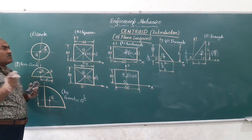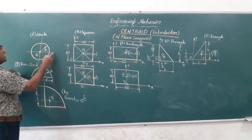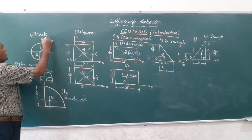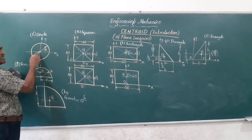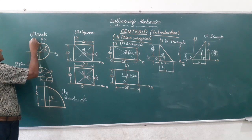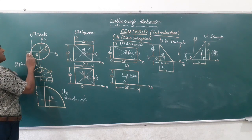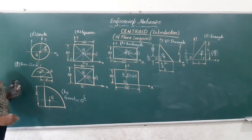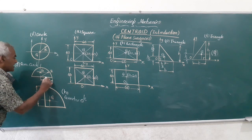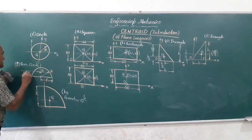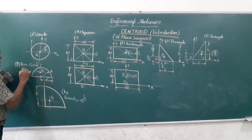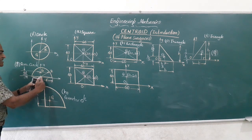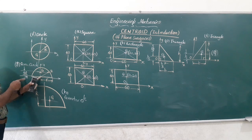For a circle, the centroid lies at G, the point of intersection of the two diameters — exactly the center of the circle. If the axes pass through the center, X-bar = 0 and Y-bar = 0. If the Y axis is placed at the left edge, X-bar = R and Y-bar = 0. For a semicircle, the centroid is at a height of 4R by 3π from the diameter. With the diameter along the X axis, X-bar = 0 and Y-bar = 4R by 3π.